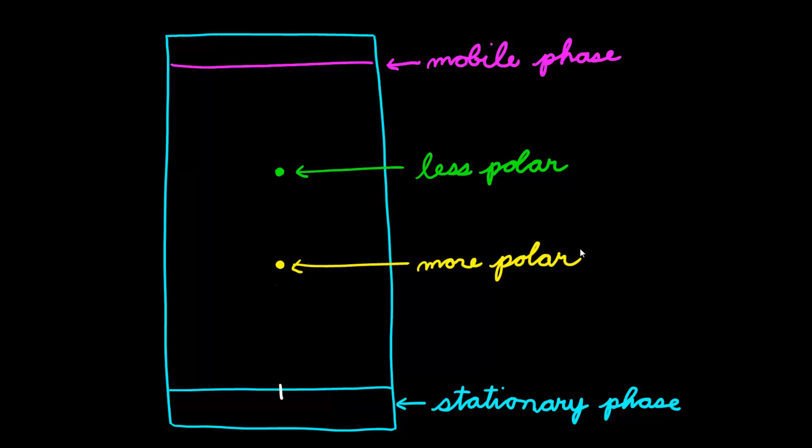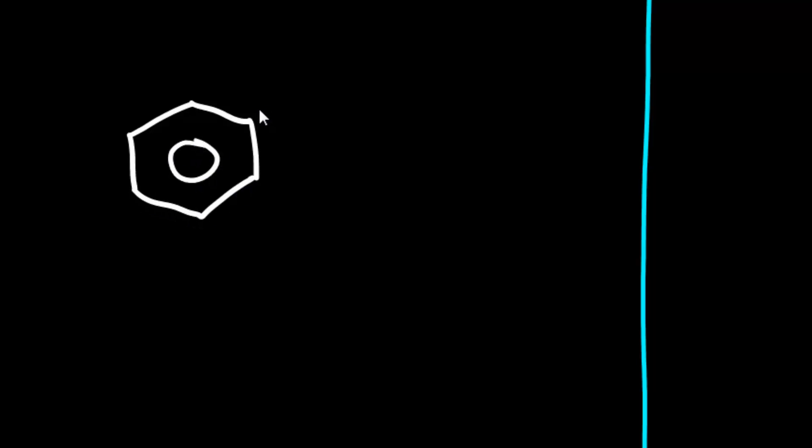So, given this information, we still don't know what these two compounds are. What you might try to do is look at your friend's lab notebook. Did he write down what compounds he ran on the TLC? Well, it turns out that he did. And what you find out is that one of these compounds is benzoic acid, which is basically an aromatic group connected to a carboxyl group.